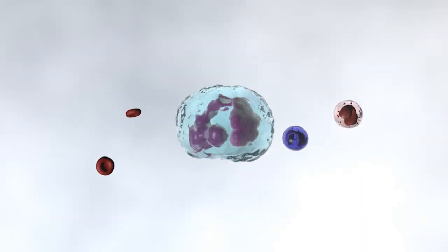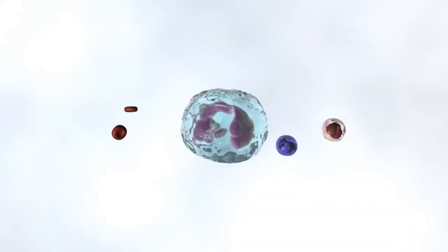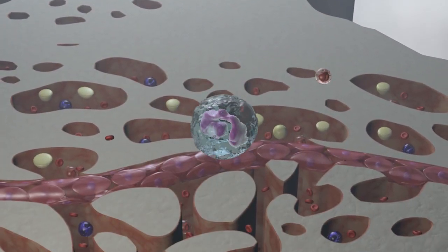The average megakaryocyte is 50 to 100 micrometers in diameter, or 15 times larger than most red blood cells.